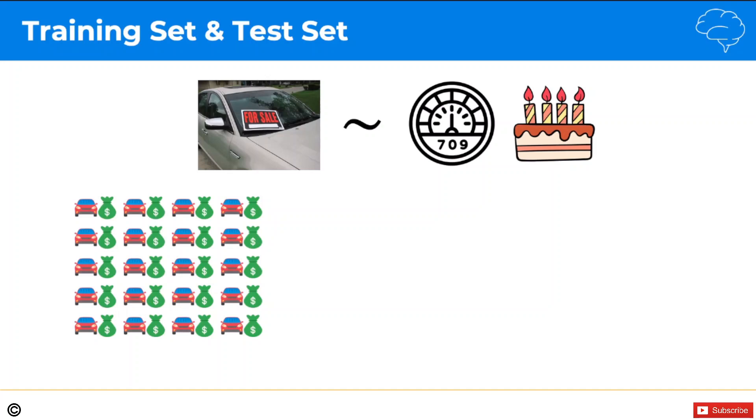So what splitting your data implies is separating a part of your data out before you do anything. And usually that's about 20% of the data. So since we have 20 cars here, that's about four cars that we separate out. So what that means is that the bulk of our data, 80% will be our training set and the separated 20% will be our test set.